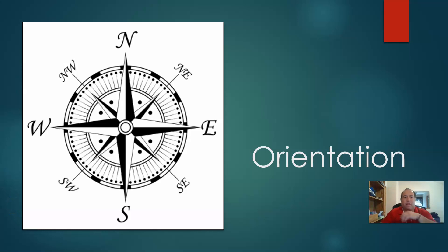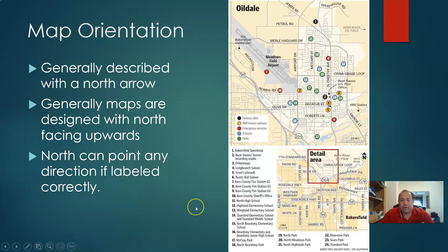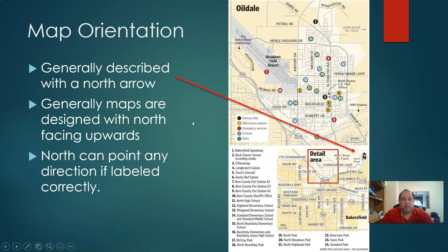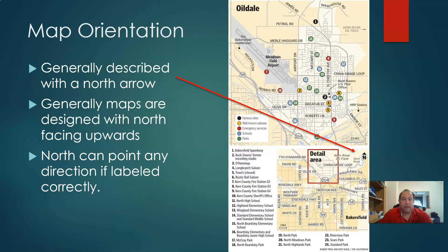Another part of maps that we maybe take for granted, but is still important to really understand, is the idea of the orientation of the map. If we just take a basic map here, we've got one of Oildale. Usually our map orientation is denoted with a north arrow. We can see on this map of Oildale that we've got our north arrow right there, so we know that north on this map is going to be up.